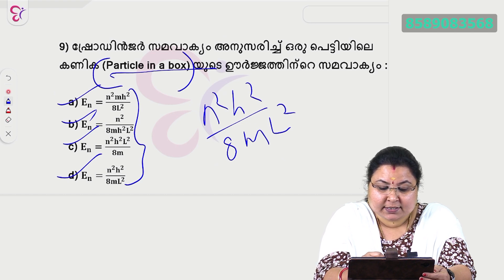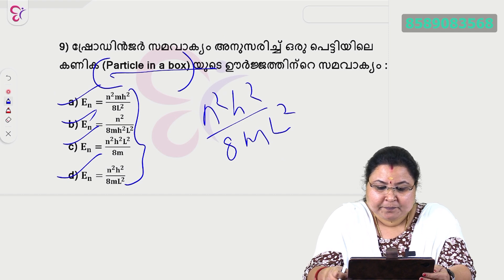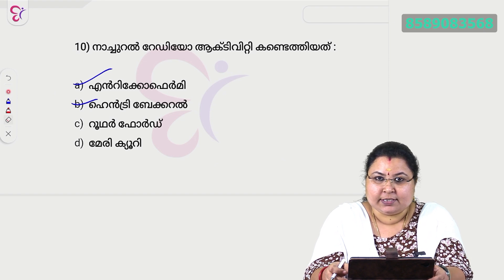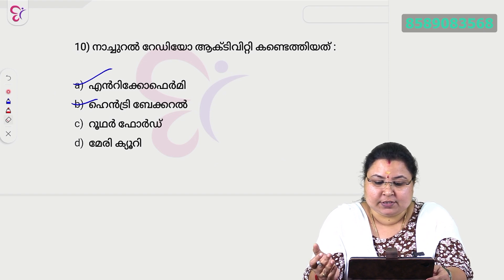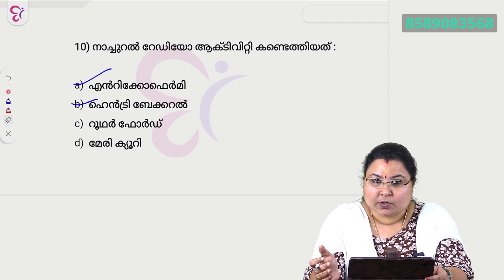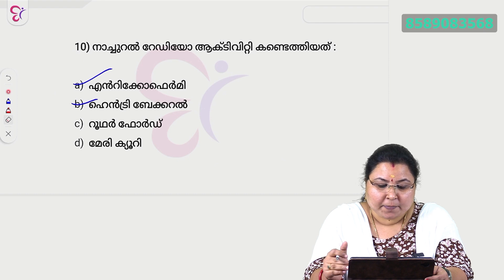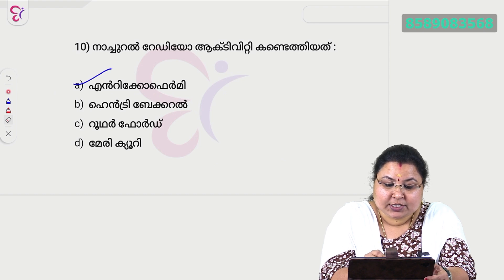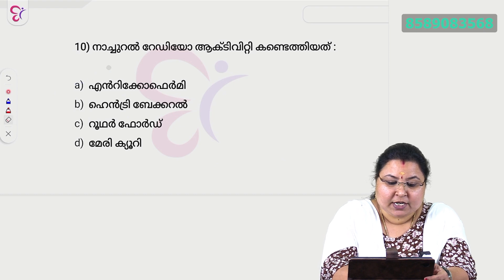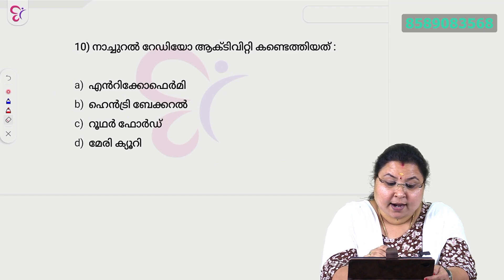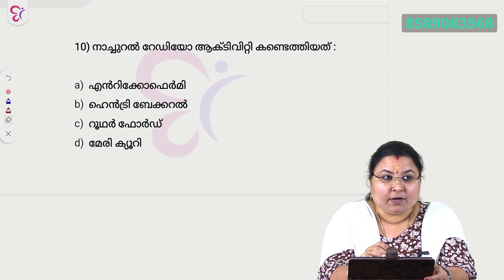The energy equation for a particle in a box is n²h² divided by 8mL². Next question: Natural Radioactivity. This is a question about nuclear physics. Options: A — Enrico Fermi, B — Henry Becquerel, C — Rutherford, D — Marie Curie. Henry Becquerel discovered natural radioactivity. Option B, Henry Becquerel, is the correct answer.